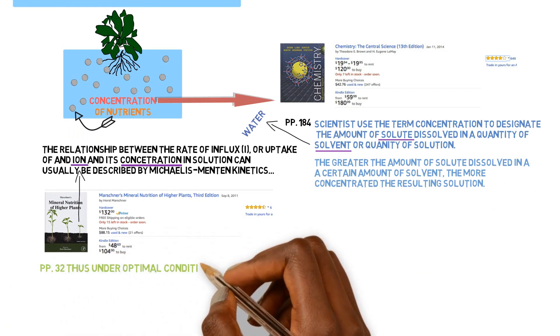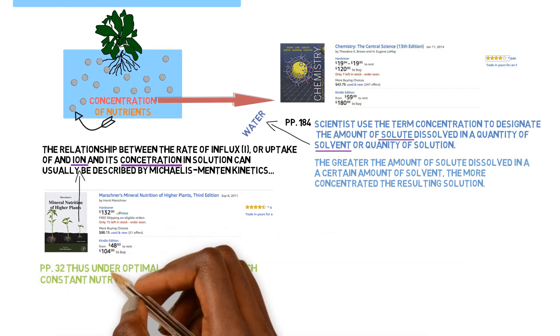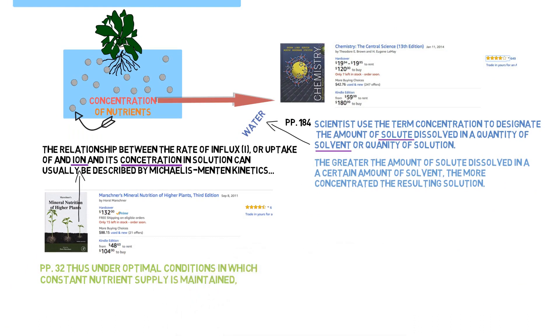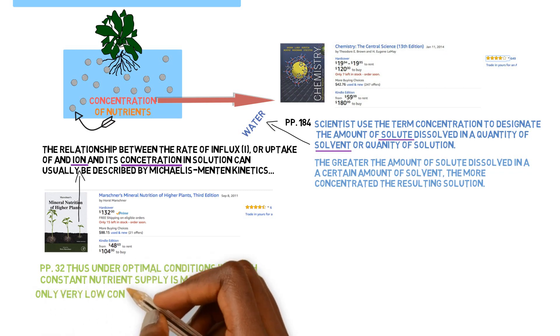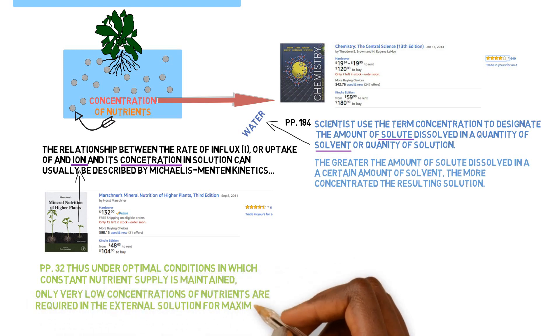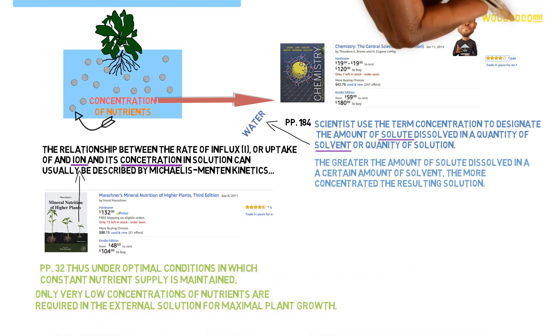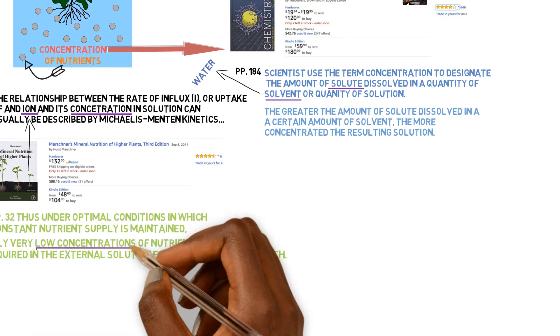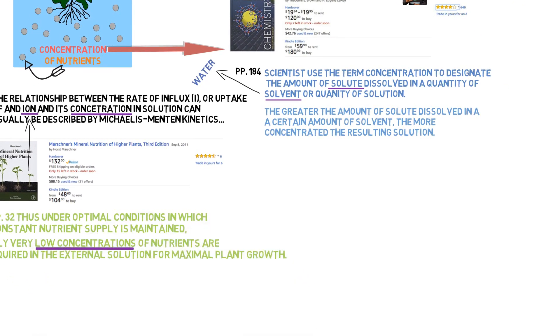Page 32, Mineral Nutrition. Thus, under optimal conditions in which a constant nutrient supply is maintained, meaning in aquaponics, we maintain nutrient concentrations. If you have a set feeding rate and you know what you're putting in the system, you can maintain a constant supply of nutrients. Only very low concentrations of nutrients are required in the external solution for maximal plant growth. You hear that? The key word: low concentrations, not total amount of nutrients. Concentrations.